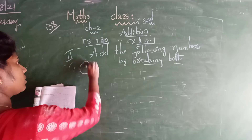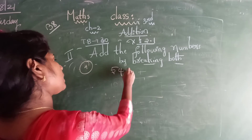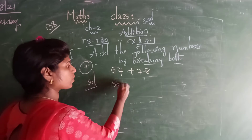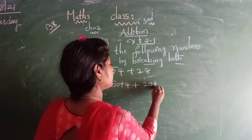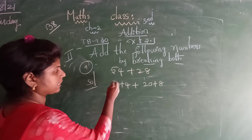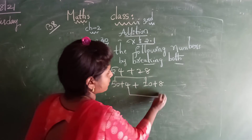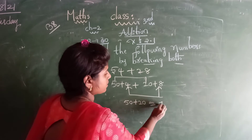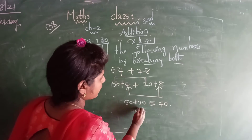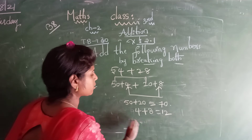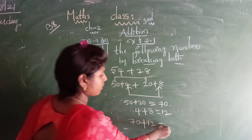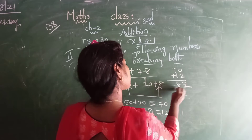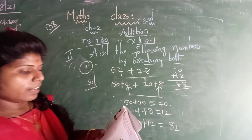Next one: 54 plus 28. So 54 is 50 plus 4, and 28 is 20 plus 8. In the order of 1st digit, 3rd digit, 2nd digit, 4th digit — do the addition. 50 plus 20 equals 70, 4 plus 8 equals 12. Overall the addition is 70 plus 12. 2 plus 0 is 2, 7 plus 1 is 8. 82 is the answer.